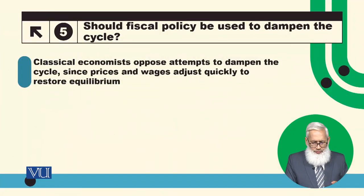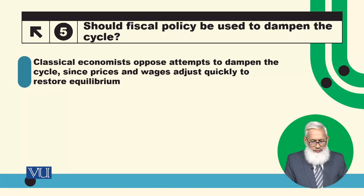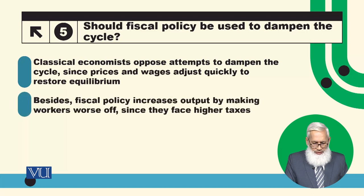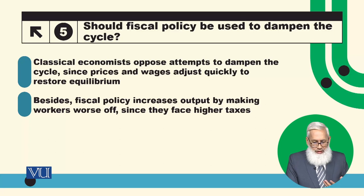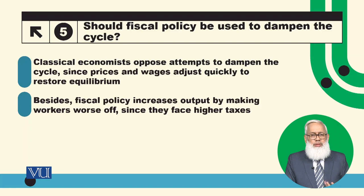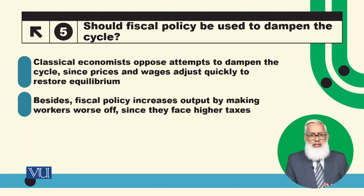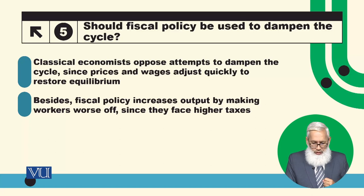Classical economists oppose attempts to dampen the business cycle, since prices and wages adjust quickly to restore equilibrium. Besides, fiscal policy increases output by making workers worse off since they face higher taxes. Should we use fiscal policy to reduce business cycle fluctuations? The classical point of view is that the economy will adjust on its own.